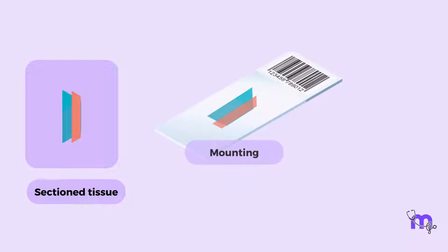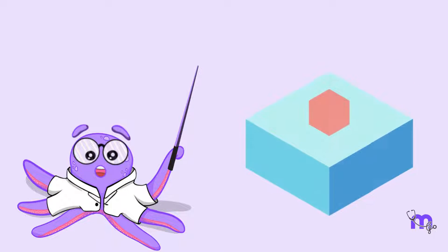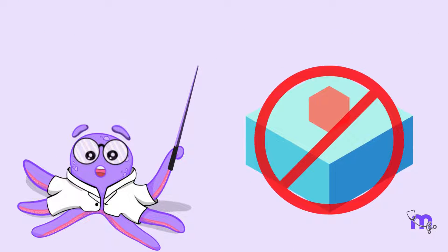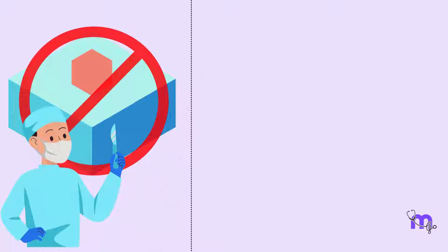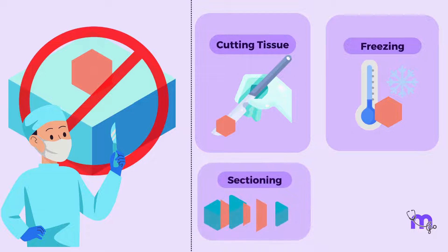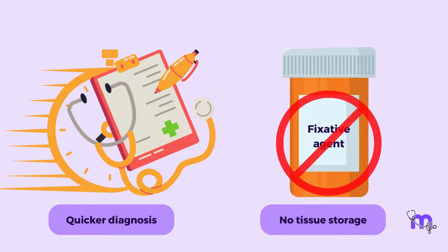The sectioned tissue is then mounted on a slide, ready to be stained. In some cases, embedding in a bed of wax may not even be required. Surgeons can cut off a piece of tissue from the patient's body, freeze it, slice it, and directly observe the tissue under a microscope. This helps get a quicker diagnosis but isn't practical for the storage of the tissue.